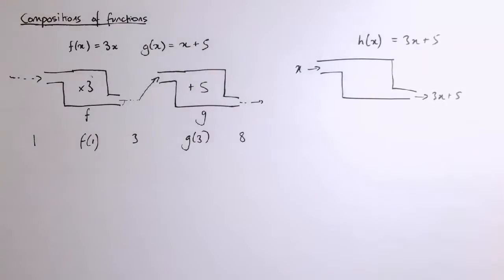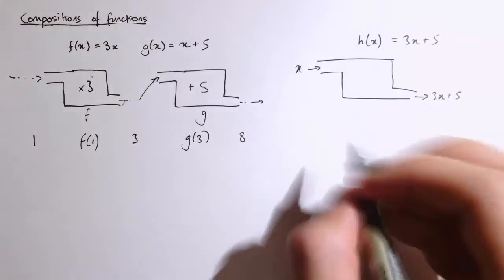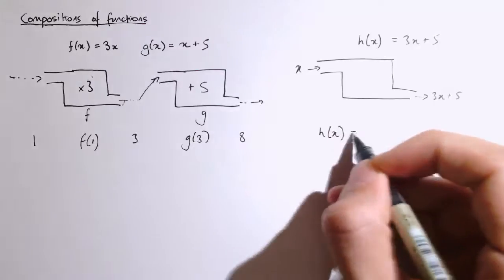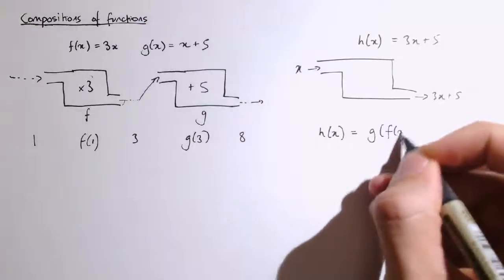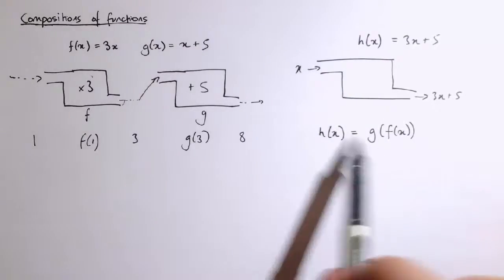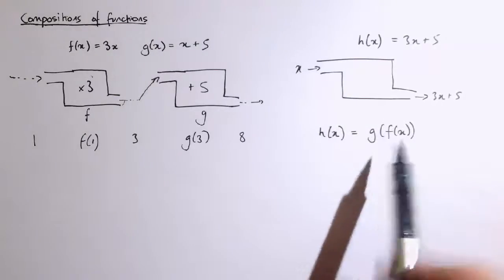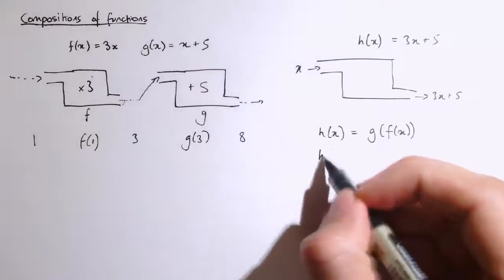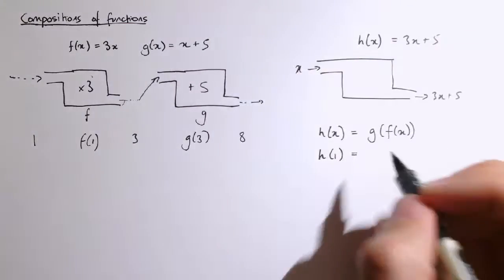So we apply f and then g. One slightly curious thing about how we write this down, although it does make sense, is that we would say that h of x equals g of f of x. So we apply f first and then g, and that gives us g of f of x, because if you think about how brackets work, for example, this function, this one here, h of 1, well, what we're doing is applying f of x first.